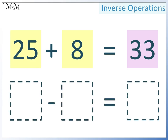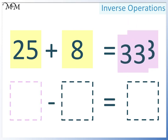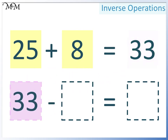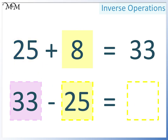Because we are taking away, the first number must be the largest, so 33 must go here. In the next space we can have either of the two smaller numbers, because a larger number take away a smaller number will leave another smaller number. We will subtract 25. The final number must therefore be 8.